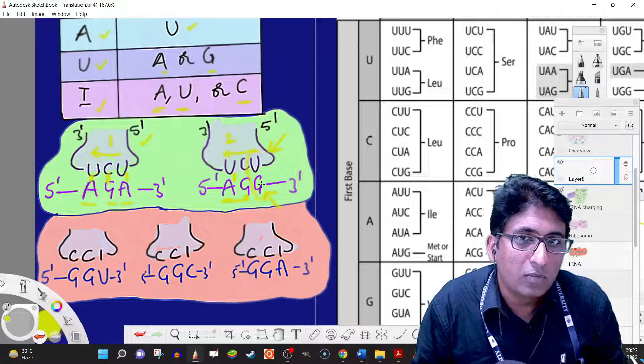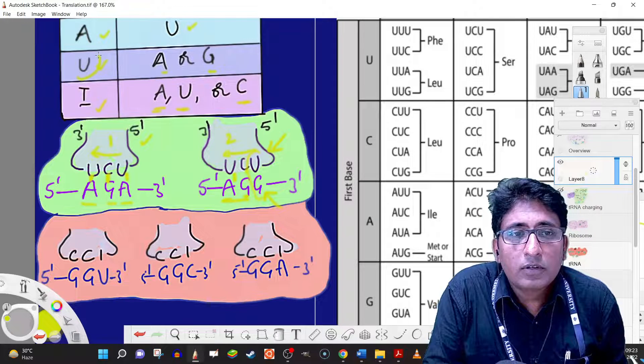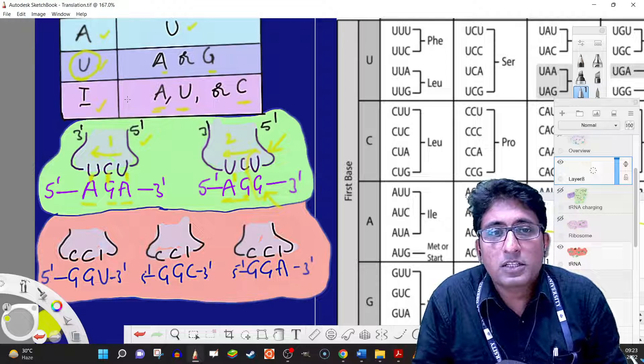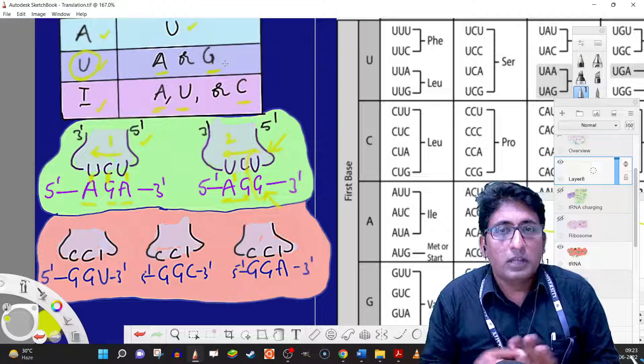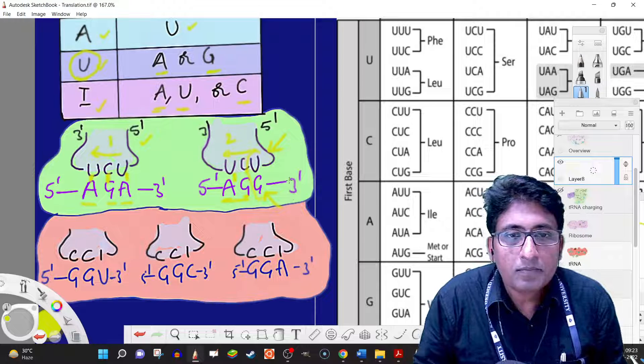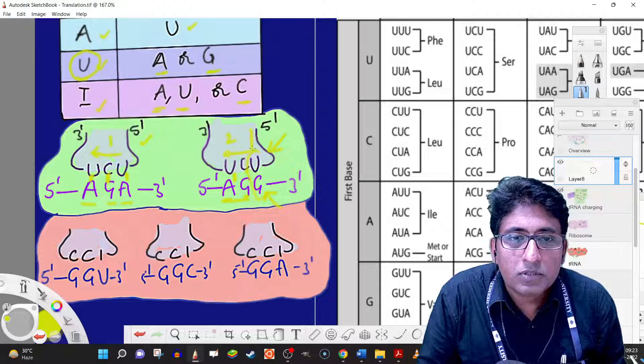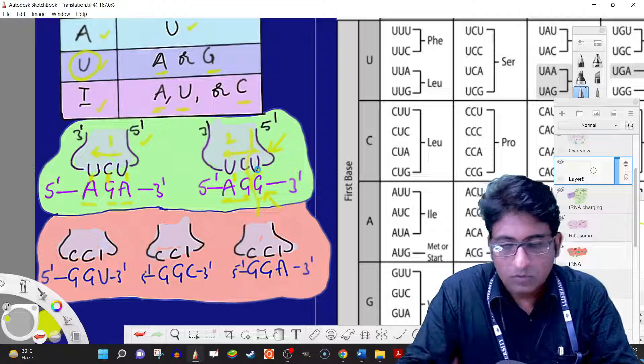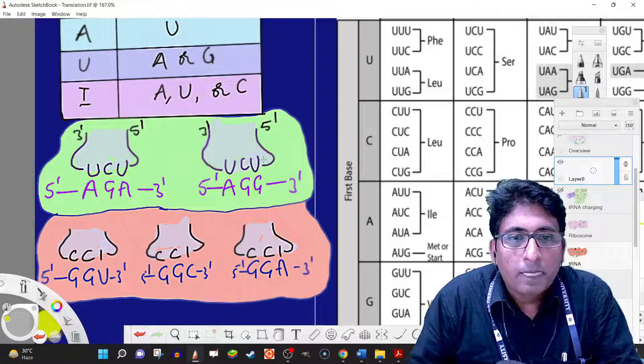If we have uracil in the anticodon, it can base pair with A or G, but not everywhere. That can only happen in the third position of the codon.